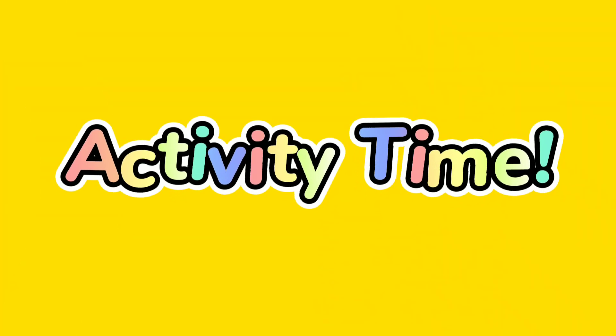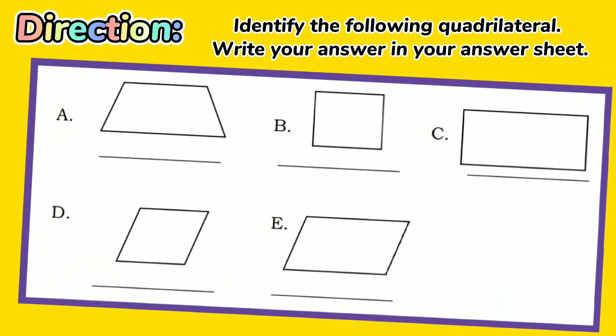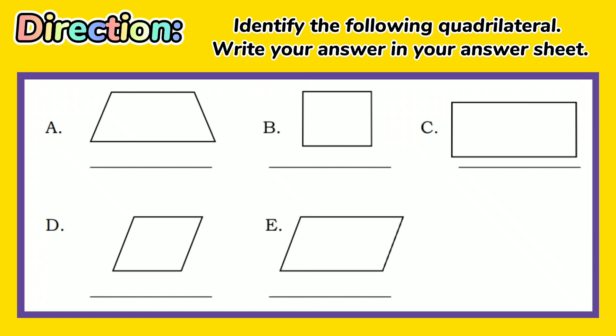Let's have our first activity. You are going to identify the following quadrilateral. Write your answer in your answer sheet, or you may comment your answers below. Letter A is trapezoid. Very good.